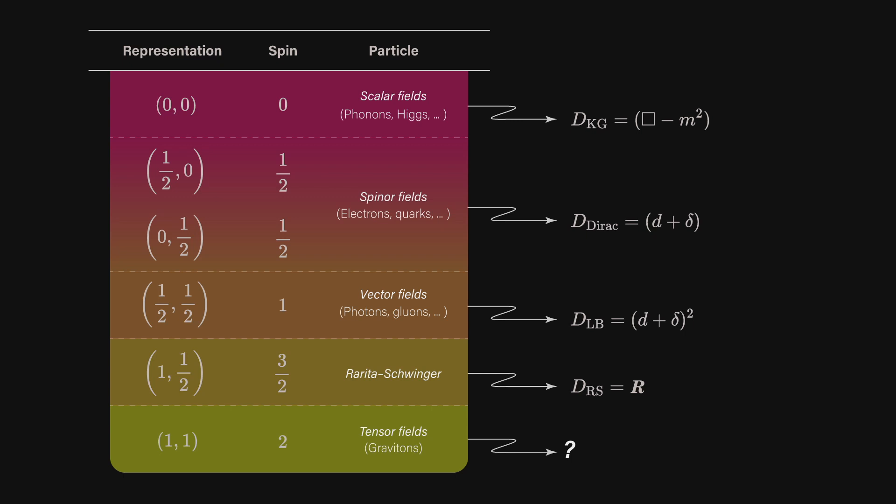For spin 1, we have vector fields that obey the Laplace-Beltrami operator, which is a generalized heat equation per se, in the form of the Maxwell or Proca equations. For spin 3/2, we have a Rarita-Schwinger operator, which is a generalization of the Dirac operator for higher spin fields. And for spin 2, we have tensor fields that should give a graviton operator of sorts, but I haven't figured that one out.